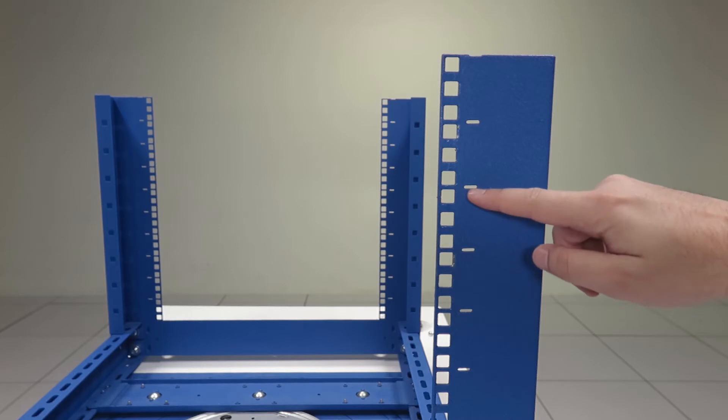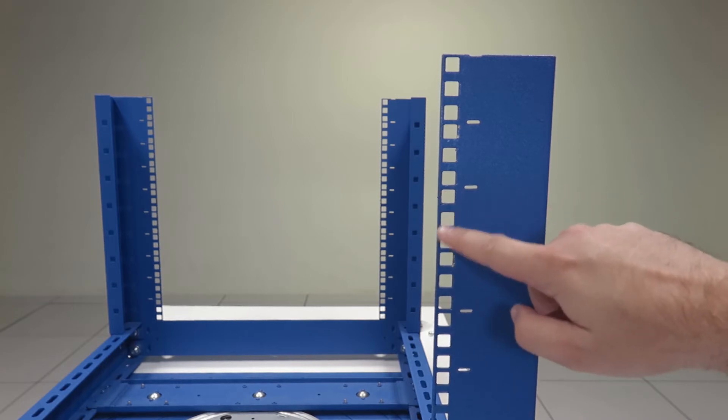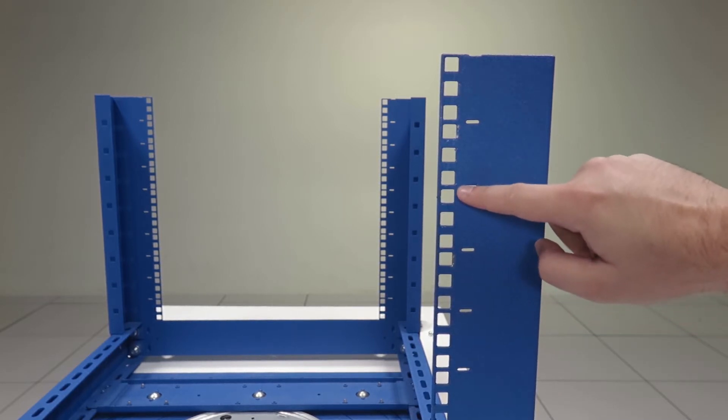This square hole rack has slots on it which aren't used for anything other than indicating where each U space stops and starts. Between each slot, there are three square holes which make up one U in space.